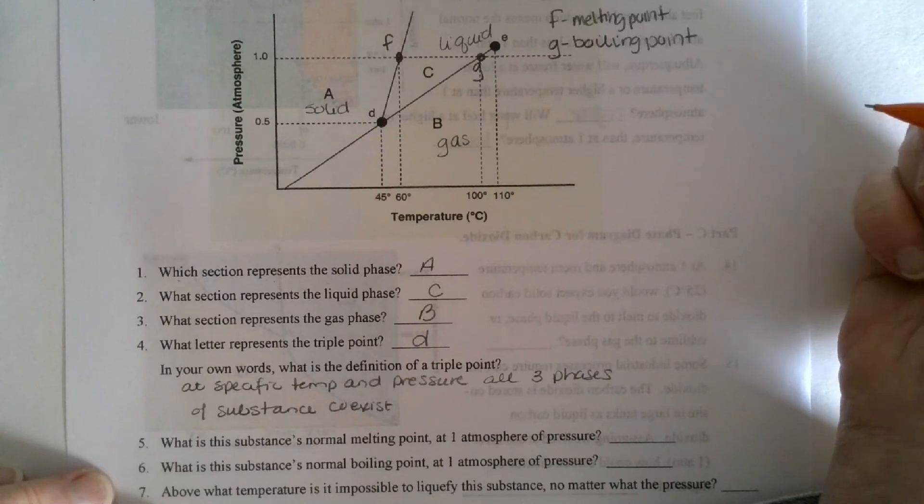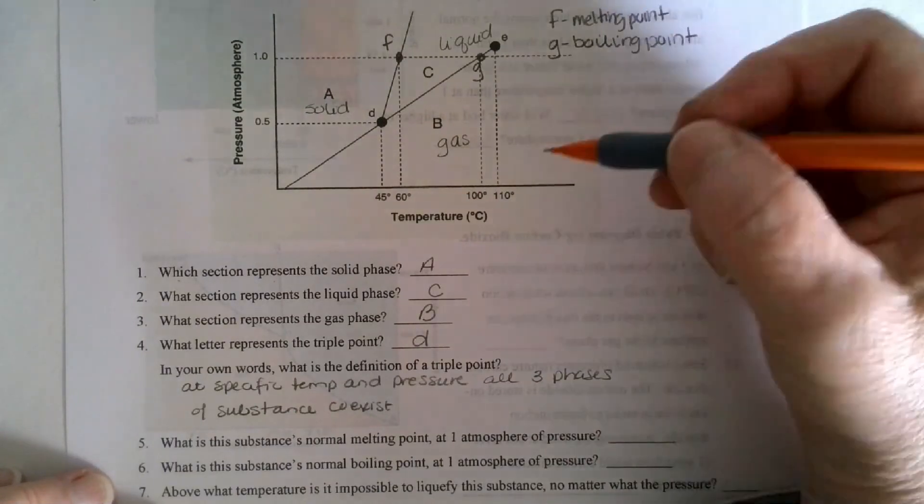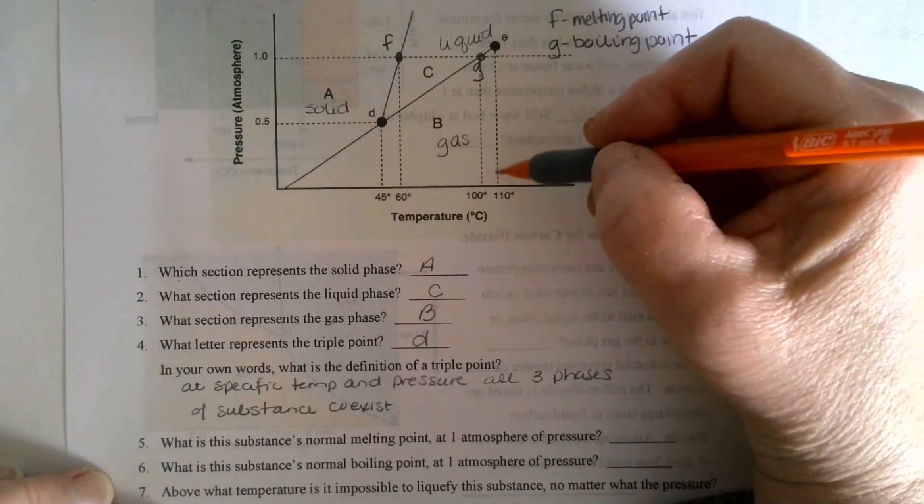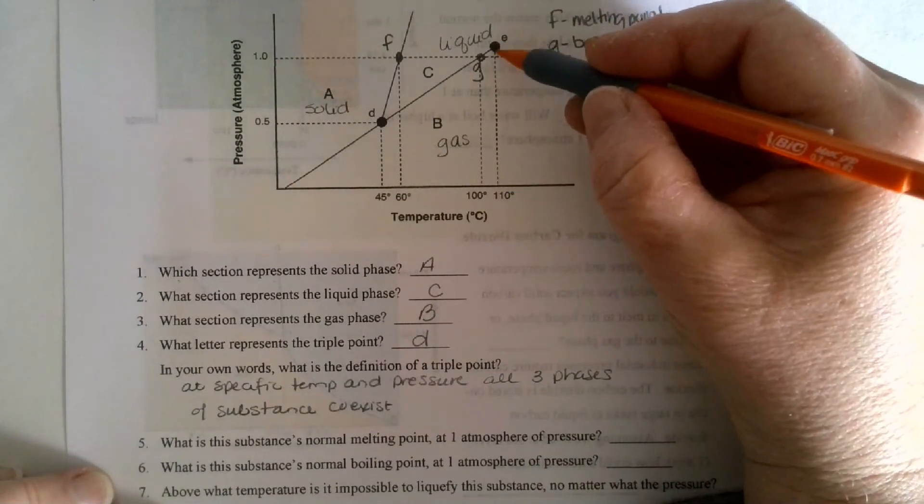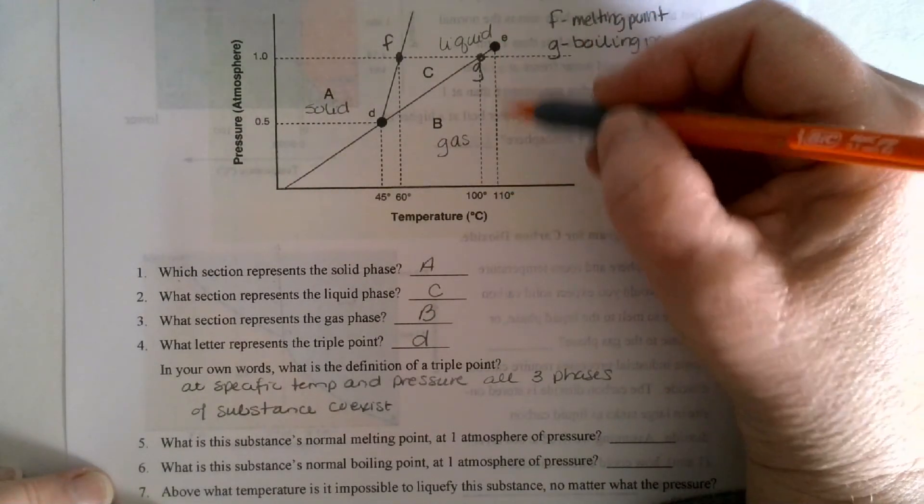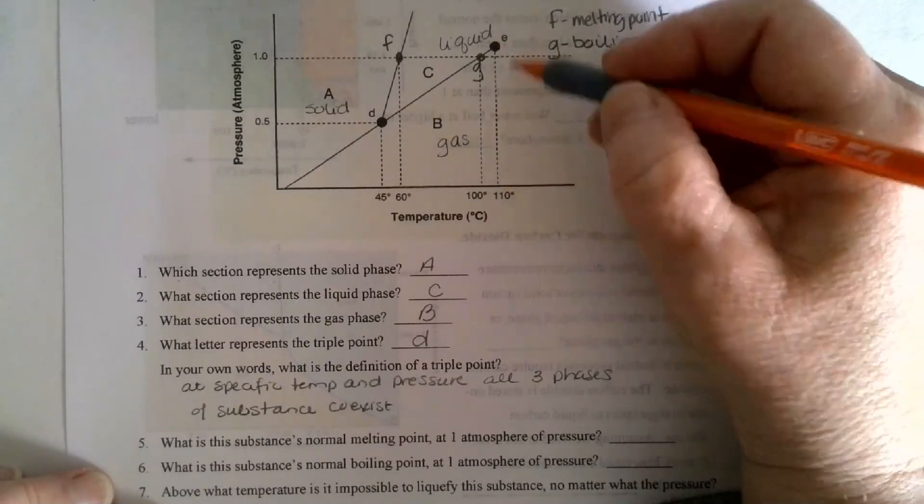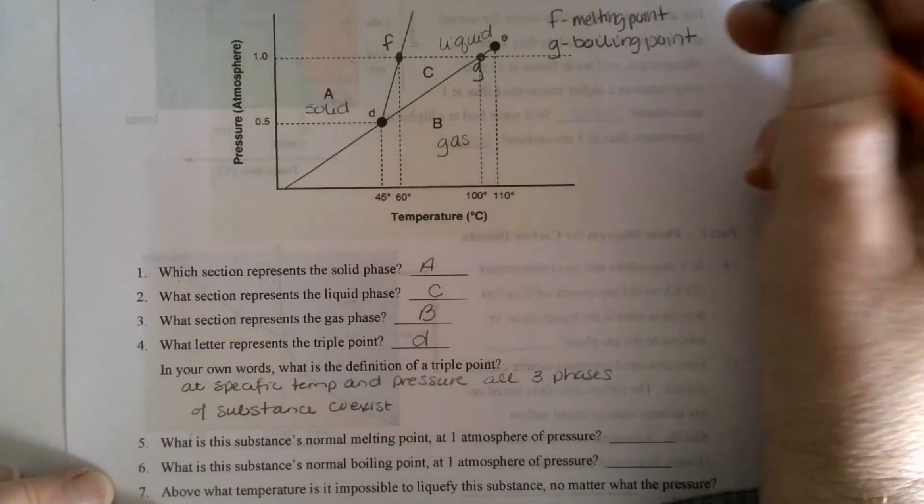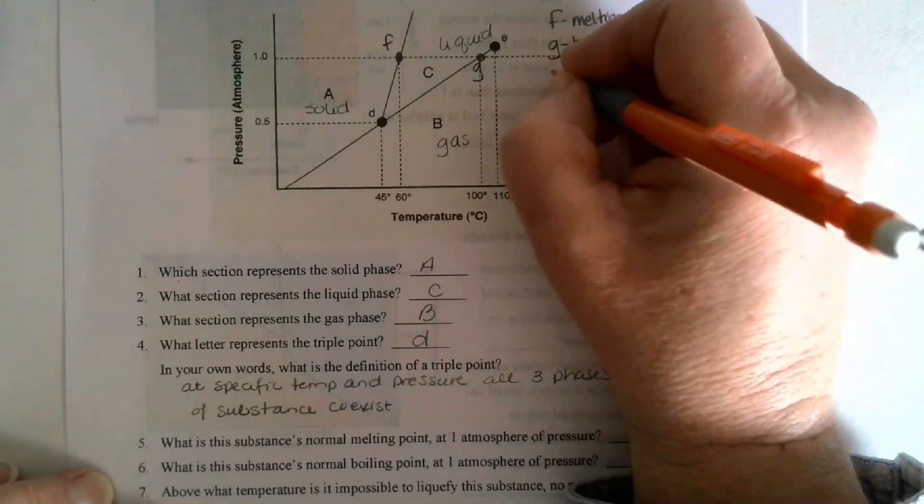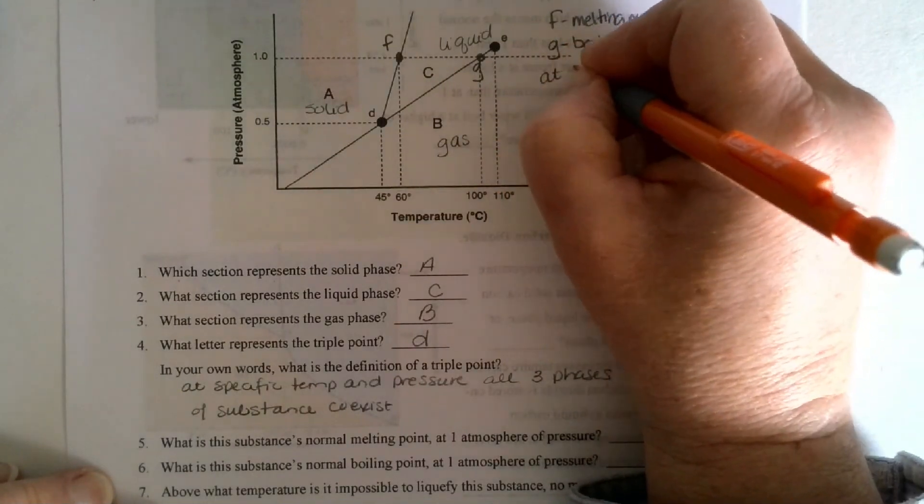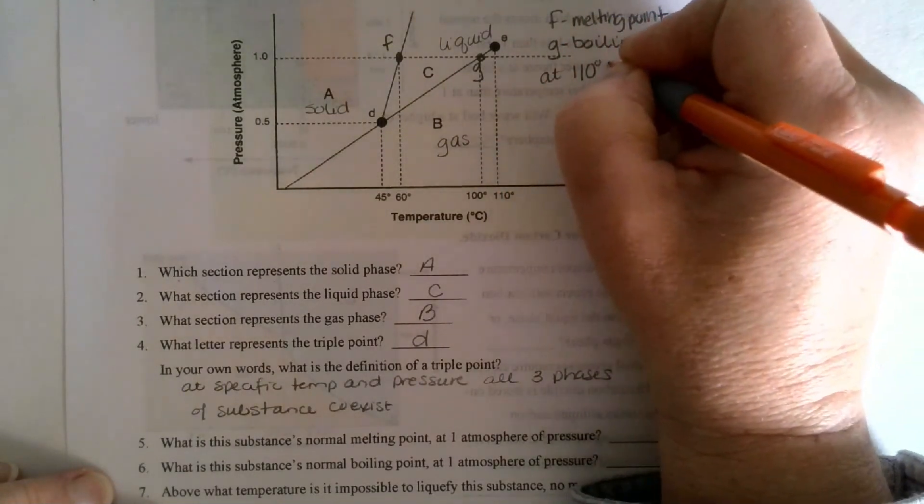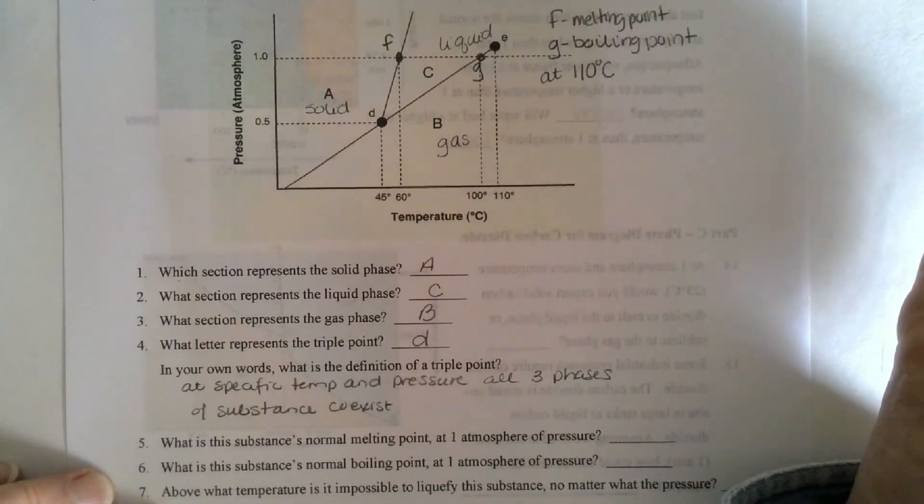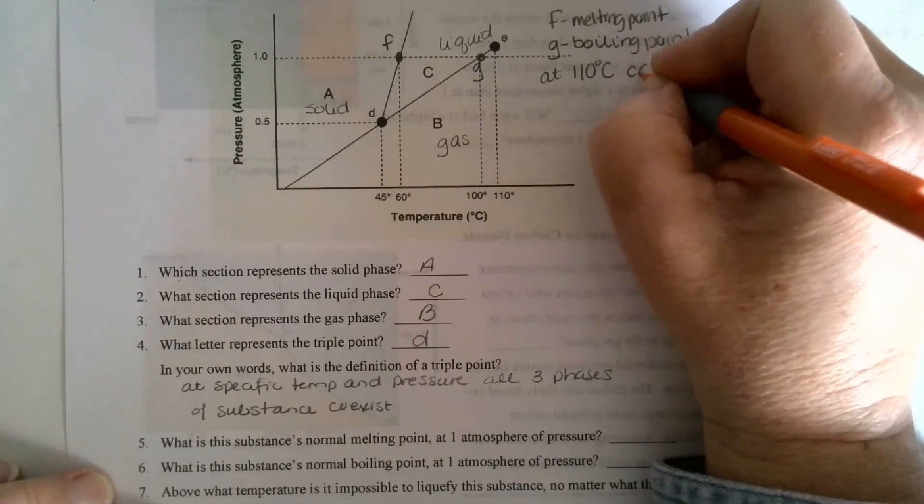Above what temperature is it impossible to liquefy the substance no matter what the pressure? Above what temperature? Well, it looks like, remember, this is a critical point. So if this is the critical point above this temperature, it doesn't really matter. So we're going to say at 110 degrees Celsius, can't liquefy.